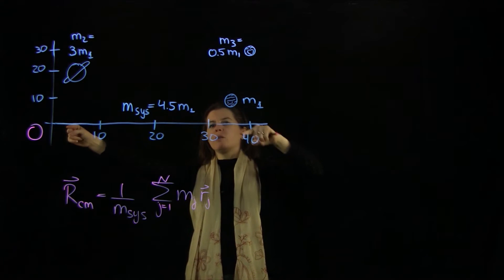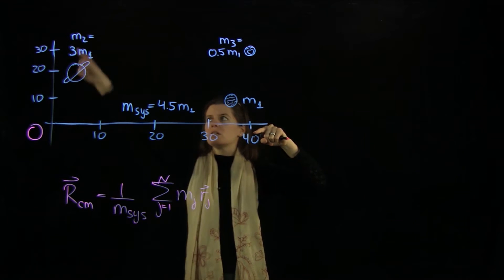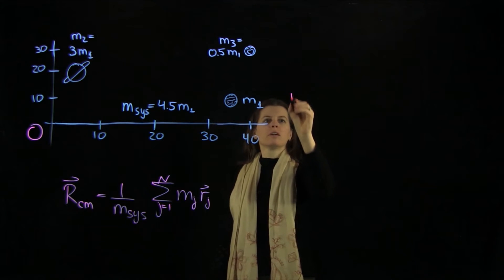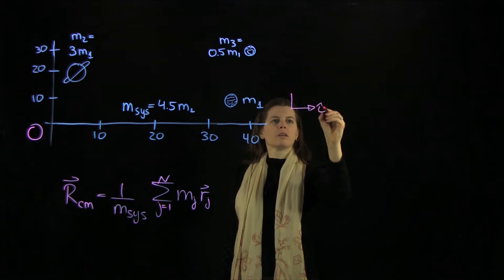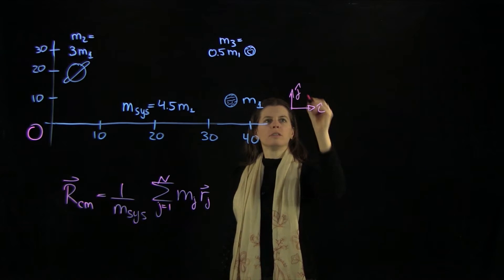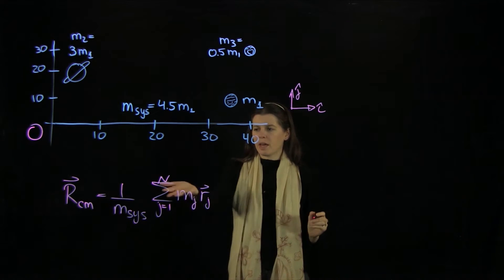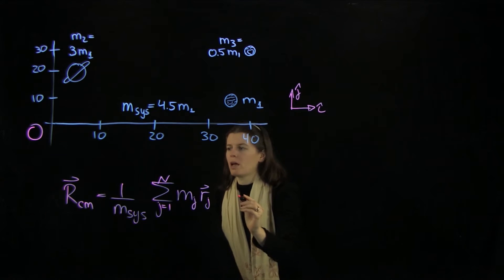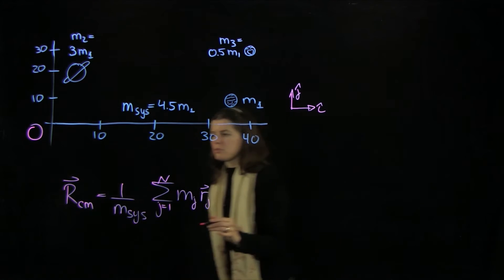We need to write them out in the i-hat direction and in the j-hat direction. Let's add that here, then sum it all up and calculate our r. So let's write this out.